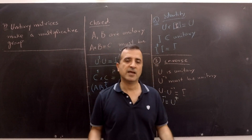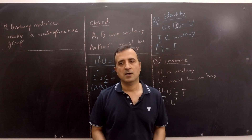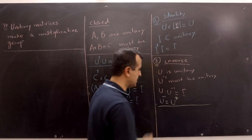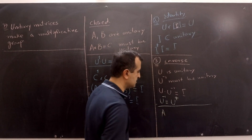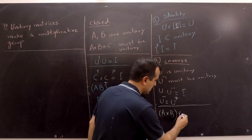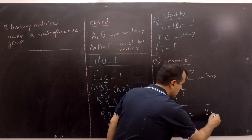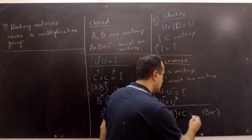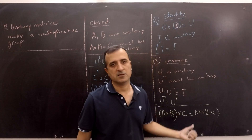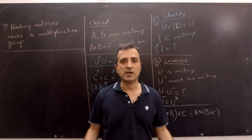The fourth and final property is associativity. For associativity, we don't have to show anything special because matrices are in general associative. If we have unitary matrices A, B, and C, we can multiply A and B first and then multiply the result with C, and we get the same result if we first multiply B with C and then multiply A with that result. The order of changing parentheses will not change the result. That's it for this video — see you in the next video with another property of unitary matrices.